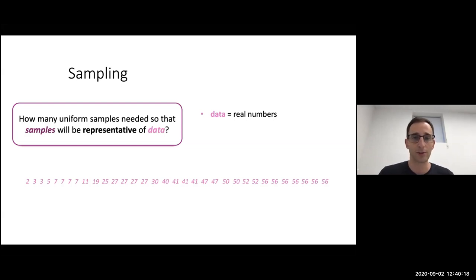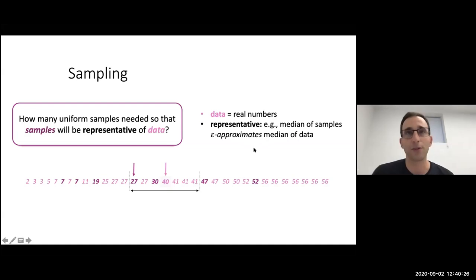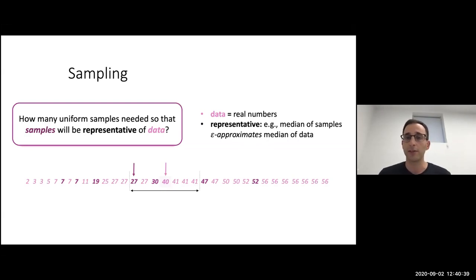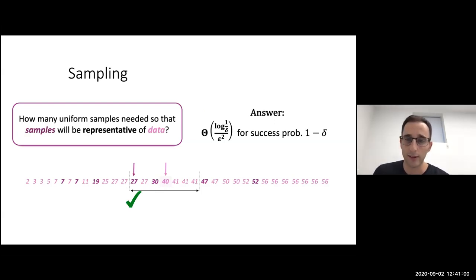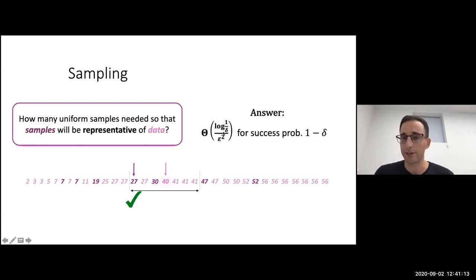Let's look at an example. I have data which are real numbers. These are in my sample, and let's say representative means the median of the samples approximates the median of the data. I want to epsilon-approximate the median of the data — so the sample is a good representative if the median is preserved up to some epsilon. If this is the median, I'm allowed to answer any element that is epsilon-close in order to the median. You can show that if you want success probability one minus delta, the number of samples you need is log(1/delta) / epsilon^2. In particular, if epsilon and delta are constant, this is just a constant — a very small number of samples suffices to represent the median.